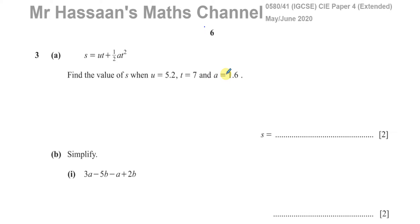Now we don't actually have to know any of the meanings of these things like you might do in physics. Here it's purely mathematical. We basically just substitute the values of U, T, and A into this formula and find what S is without knowing what they stand for. So you have U which is 5.2 times T which is 7, plus a half times A which is 1.6, times T squared which is 7 squared.